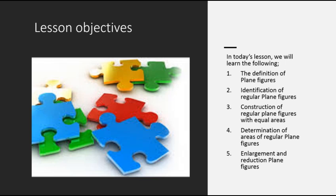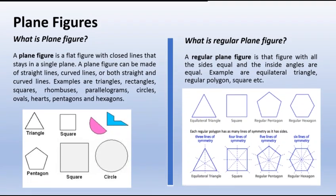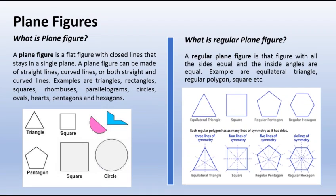And five, enlargement and reduction of plane figures. What is a plane figure? A plane figure is a flat figure with a closed line that stays in a straight line. A plane figure can be made of straight lines, curve lines, or both straight and curve lines. Examples are triangle, rectangle, square, rhombus, parallelogram, and circle.